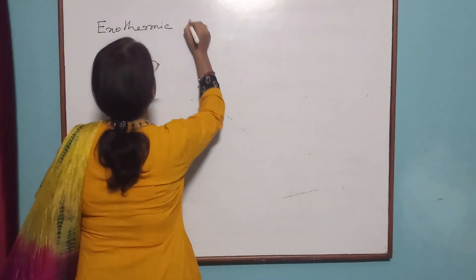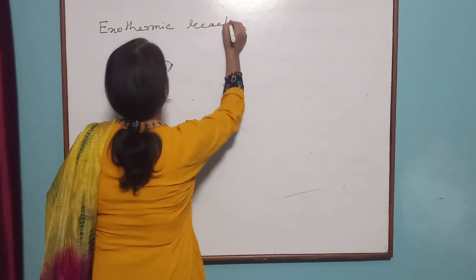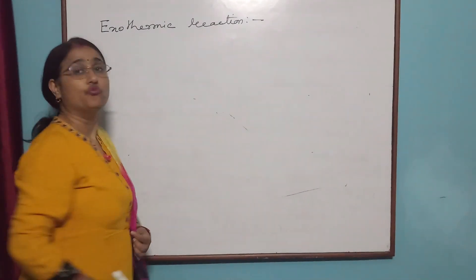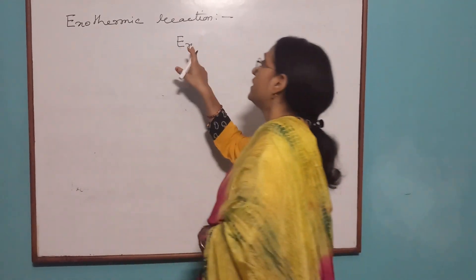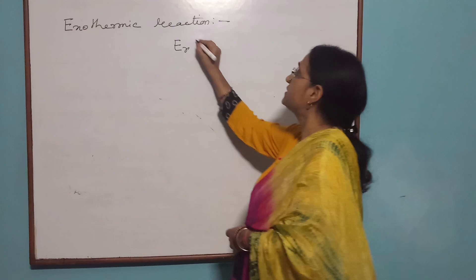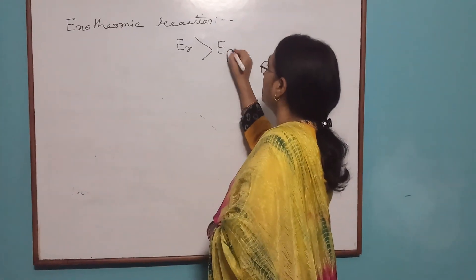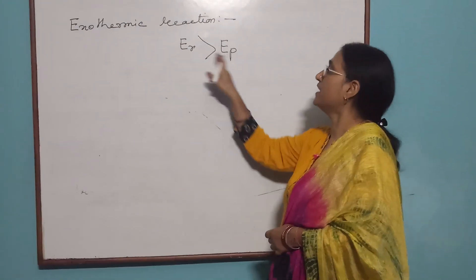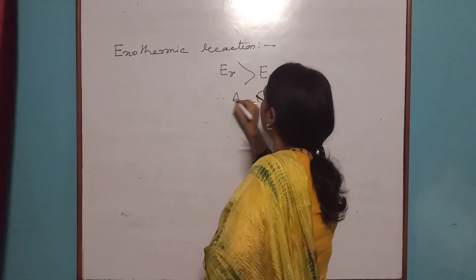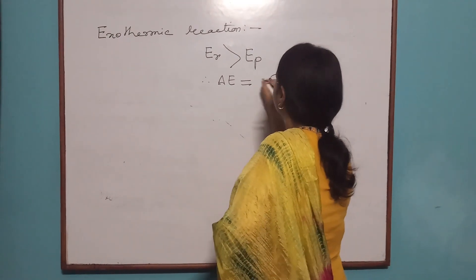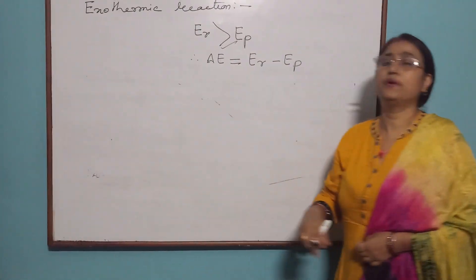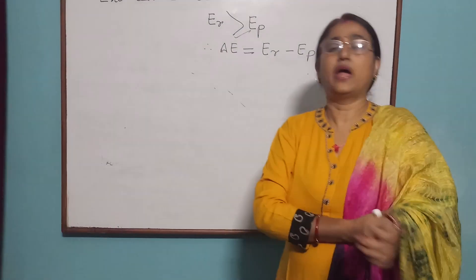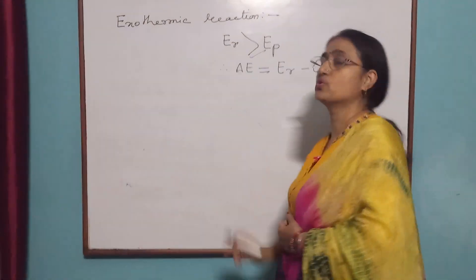What is exothermic reaction? When the internal energy of reactant, denoted by ER, is greater than the internal energy of product, EP, then the difference in energy — del E = ER minus EP — will be evolved in the form of heat. Such a reaction is known as an exothermic reaction.